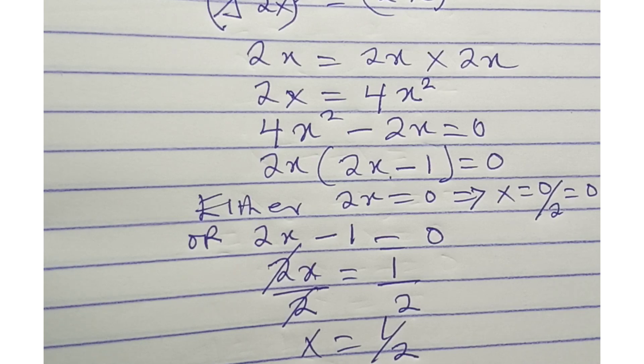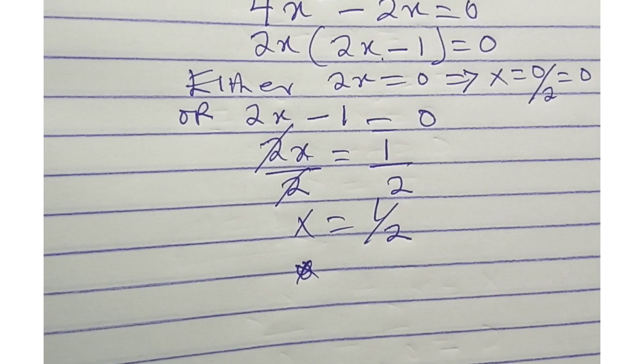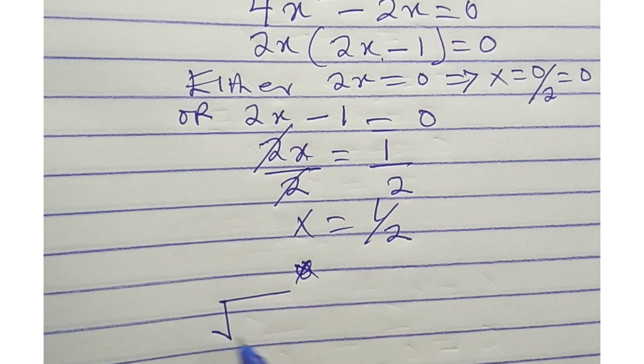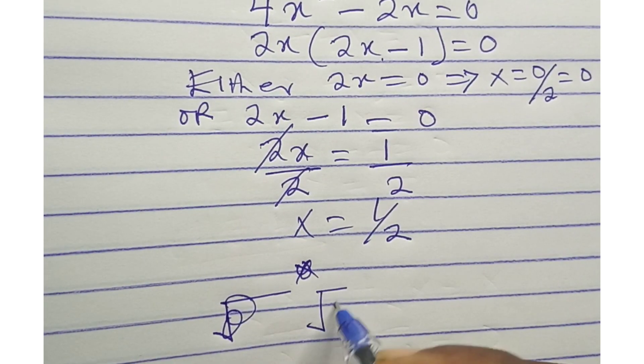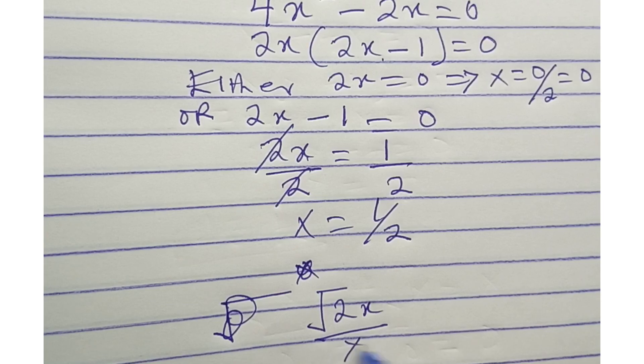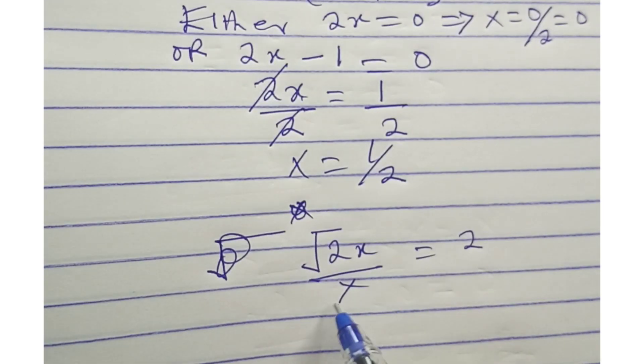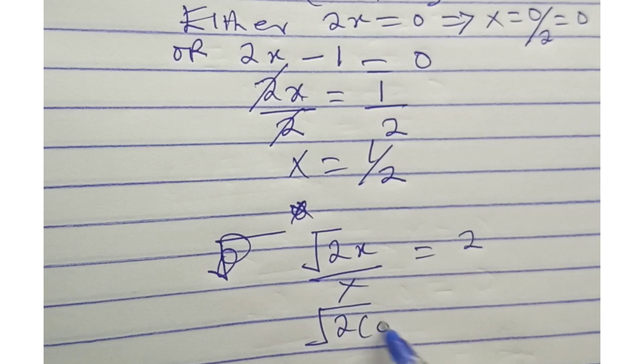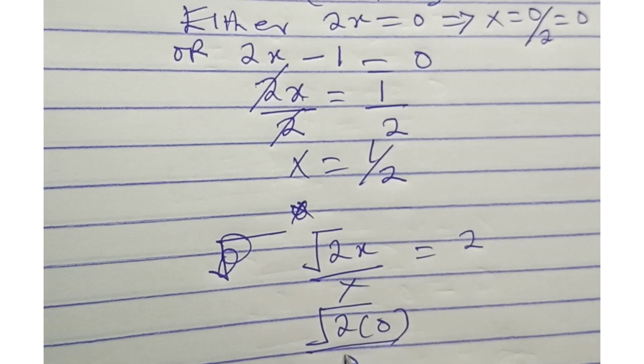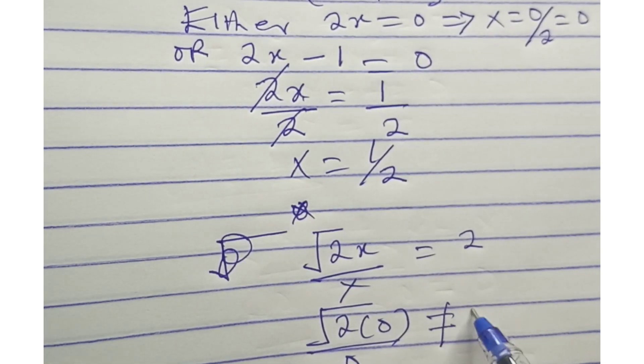We can check if our answers are correct. Remember the real equation was root 2x over x equals 2. So if we put 2 bracket zero, root 2 times 0 over 0 is not equal to 2.